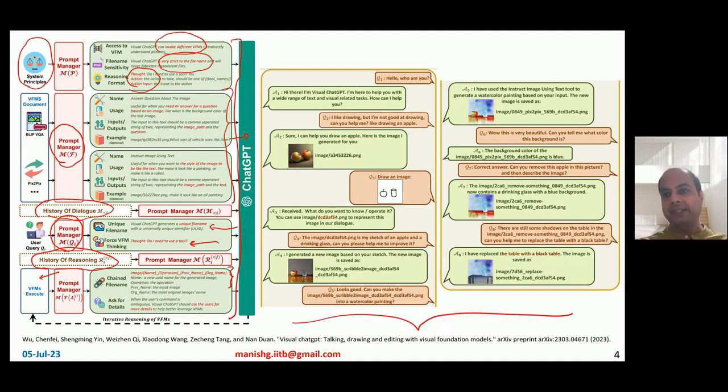Now here is an example output from the system, a dialogue conversation between user and the Visual ChatGPT model. User just says hello, who are you? And there's a text command. The Visual ChatGPT model just says, well I'm Visual ChatGPT. You can actually use me for doing various kinds of text and visual tasks. Now then the user can say I like drawing but I'm not good at it. Can you help me draw an apple? So the Visual ChatGPT system at this point should invoke a visual model which can take text and create images. The user can then say draw an image and uploads a sketch.